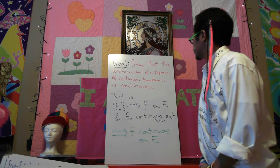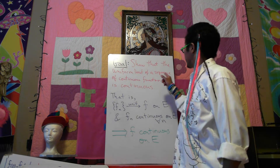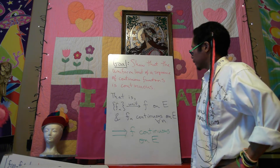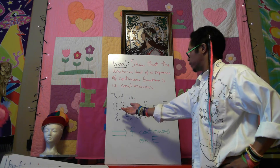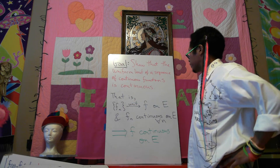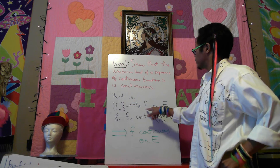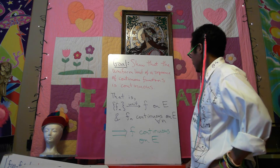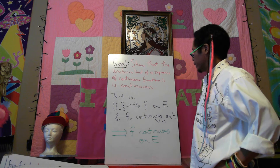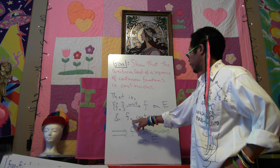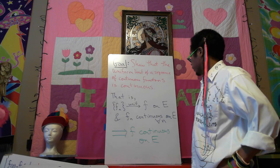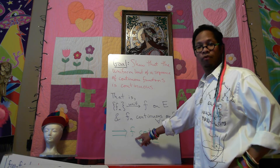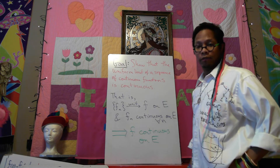Hello. I'm going to show that the uniform limit of a sequence of continuous functions is continuous. That is, given a sequence of functions f_n converging uniformly to a function f — that's what it means to be a uniform limit — and suppose that all the f_n functions are continuous on E for every n. Then we'll show that f, the uniform limit of the sequence, is continuous also.